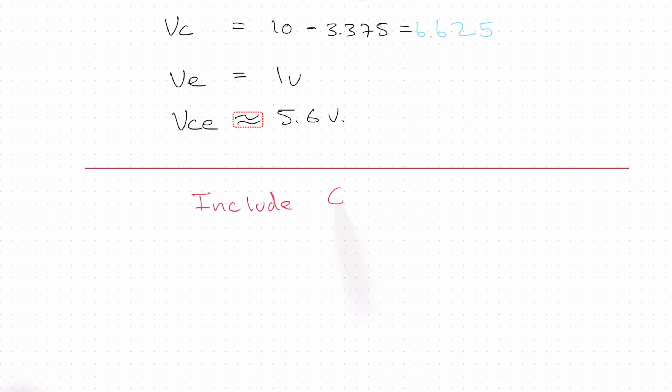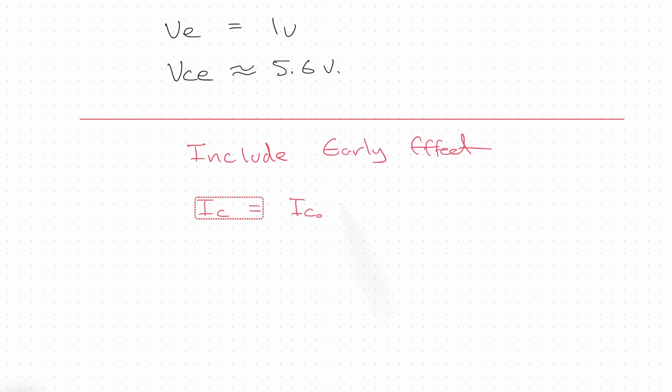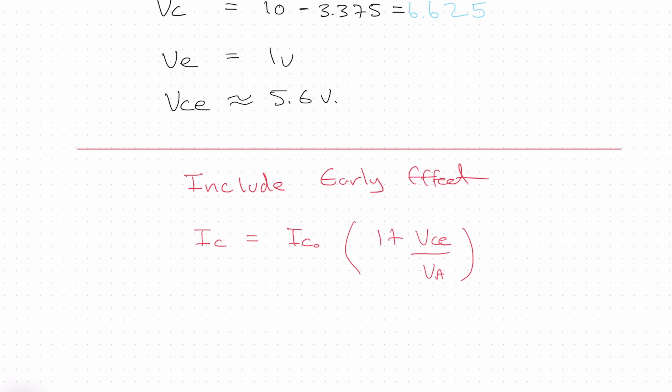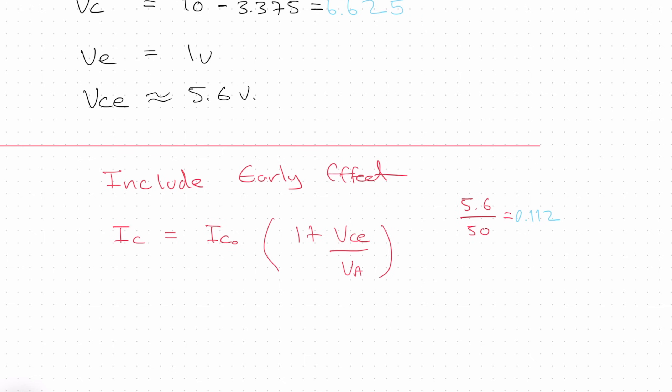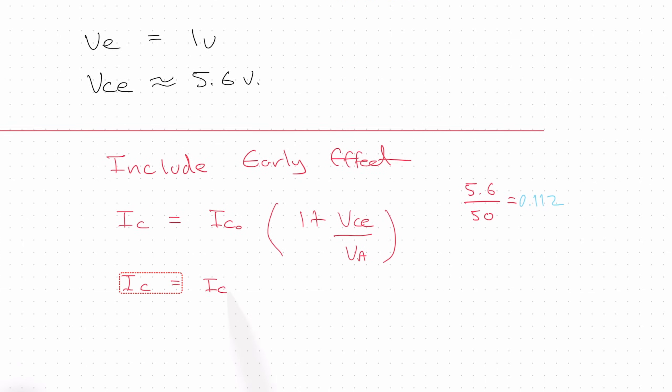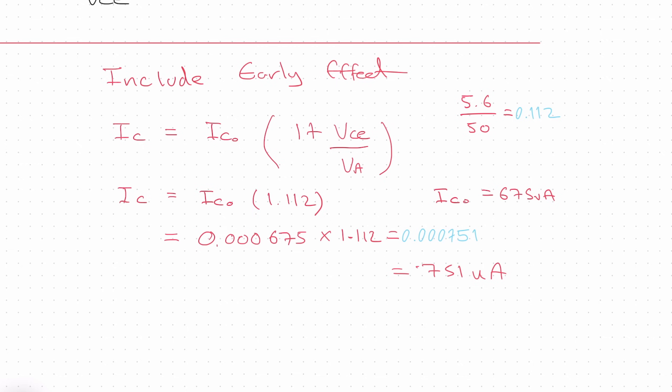Now, if we include early effect, IC is equal to IC0 times one plus VCE divided by VA. So VCE we have as 5.6. We have VA as 50 volts. If you plug in those numbers, so 5.6 divided by 50 gives us 0.112. So IC is equal to IC0, and in the brackets, we have 1.112. We had IC0 was equal to 675 microamps. So if you calculate that, so 0.000675 times 1.112, we get a collector current of 751 microamps. So early effect takes the collector current from 675 to 751.